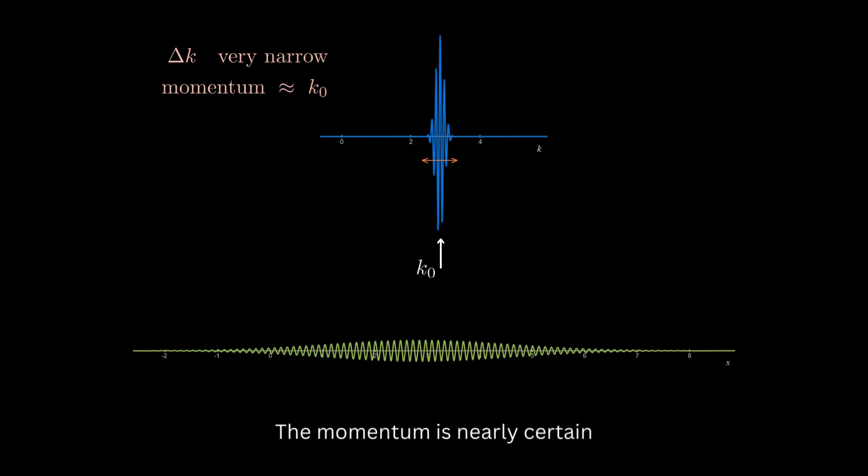If the wave packet in the momentum space is narrow enough, then k doesn't change much inside its range. In the position space, the wave packet will be very wide, and so the dispersion will hardly be noticeable. In other words, the momentum of the particle is nearly certain at k0, but the position is highly uncertain.